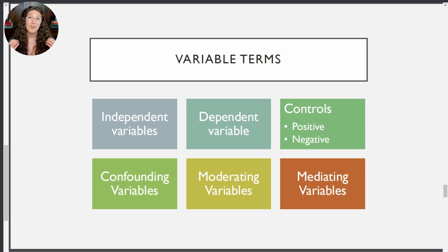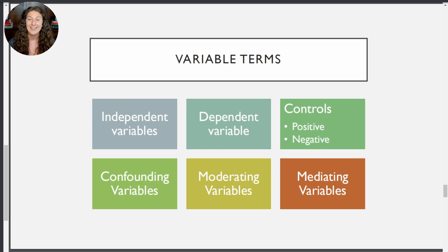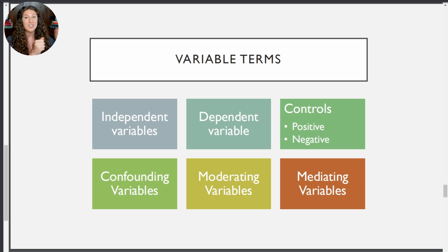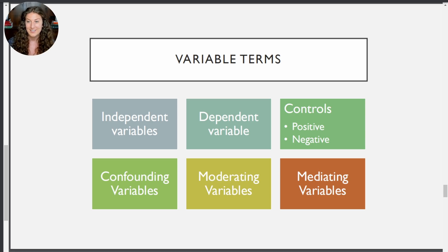Dependent variables are the thing that we're measuring. Going back to our music and test performance study, if we wanted to measure students' performance with or without music, the dependent variable would be the thing that we're measuring, that we're curious about — which would be the students' performance on that exam. So the independent variable is like, if we change this, what happens? And the dependent variable is the 'what happens' — the measurement that comes out of the research study.